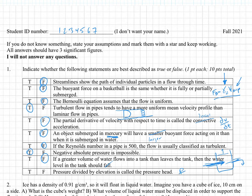Pressure divided by elevation is called the pressure head. Pressure divided by elevation is called nothing — that's a nothing thing. So we're going to call that false. The correct answer here would be pressure divided by the specific weight of the fluid. So two trues: number four and number eight.